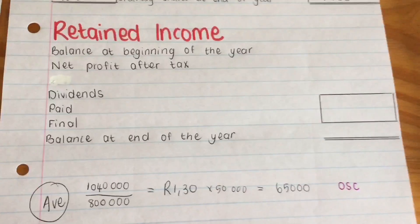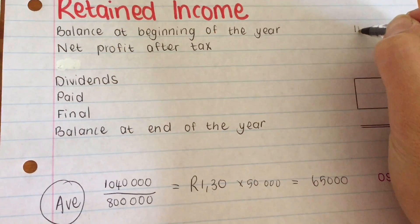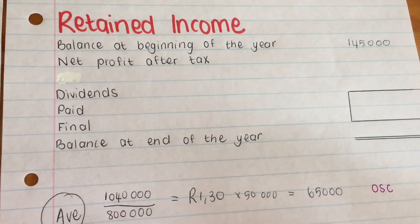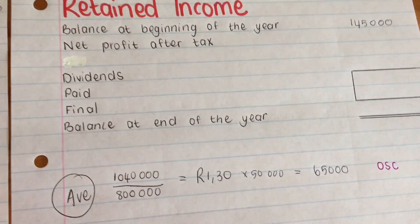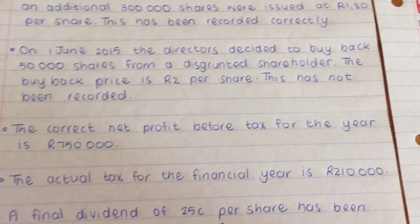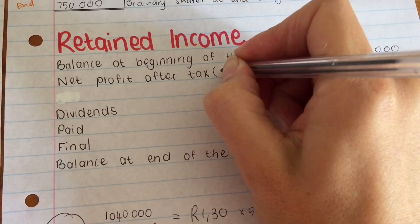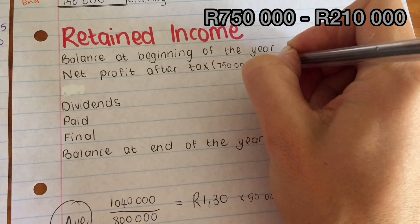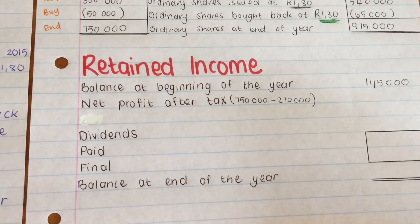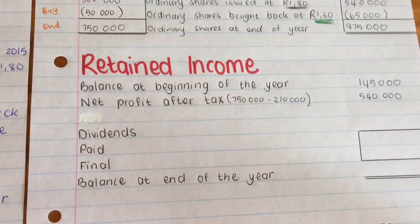Now we're going to look at Retained Income, which is straightforward. We start with the balance at the beginning of the year from the trial balance: R145,000. Then I need the net profit after tax. The information gives me net profit before tax and income tax, so the difference gives me net profit after tax: R750,000 minus R210,000, giving net profit after tax of R540,000.